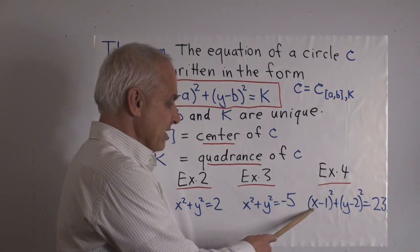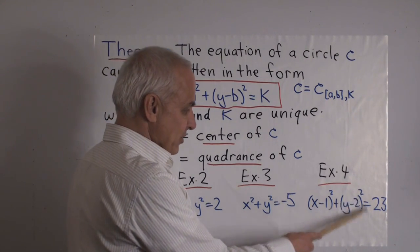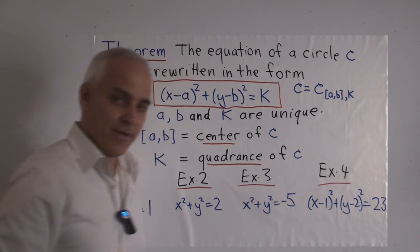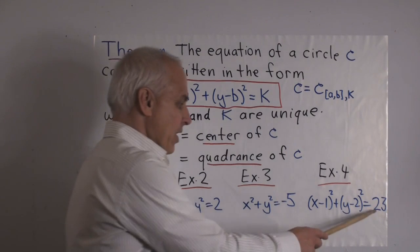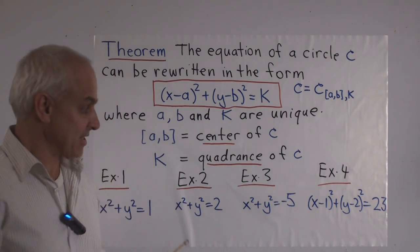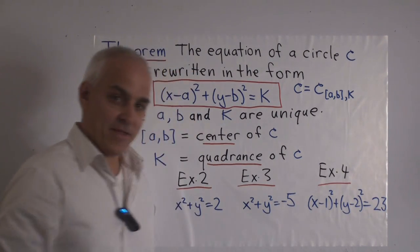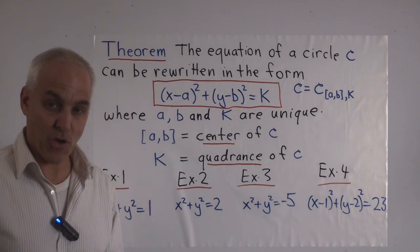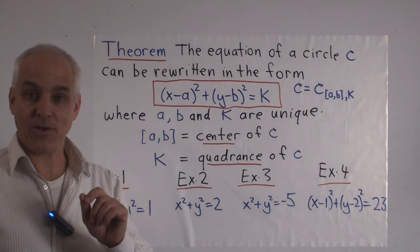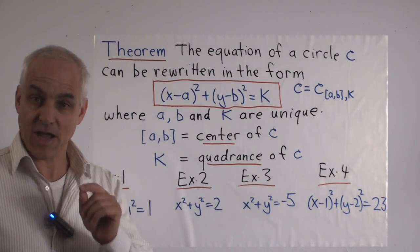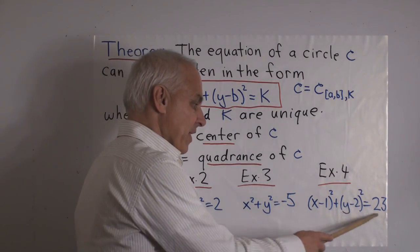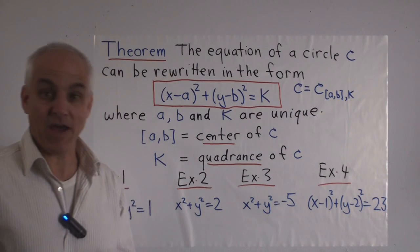And another example, (x-1)² + (y-2)² = 23. That's a circle with center (1,2), quadrance 23. It's less obvious in this case that there are in fact no points that lie on that circle, no rational points. That's going to be a number theoretical aspect of the subject that's going to come up in our next video. But for now, let's just observe that this thing is still an example of a circle.